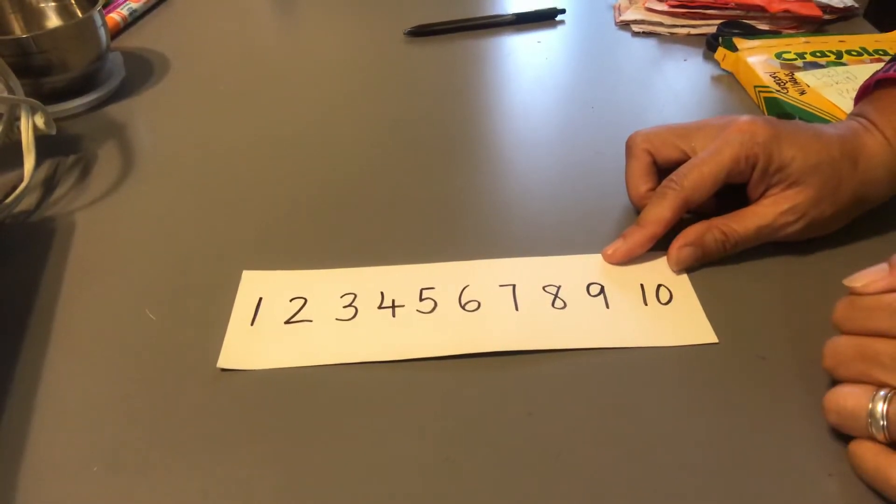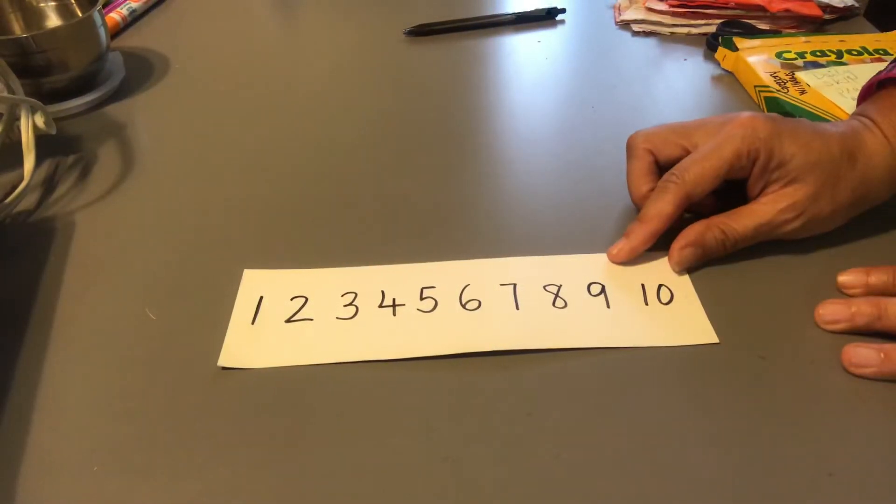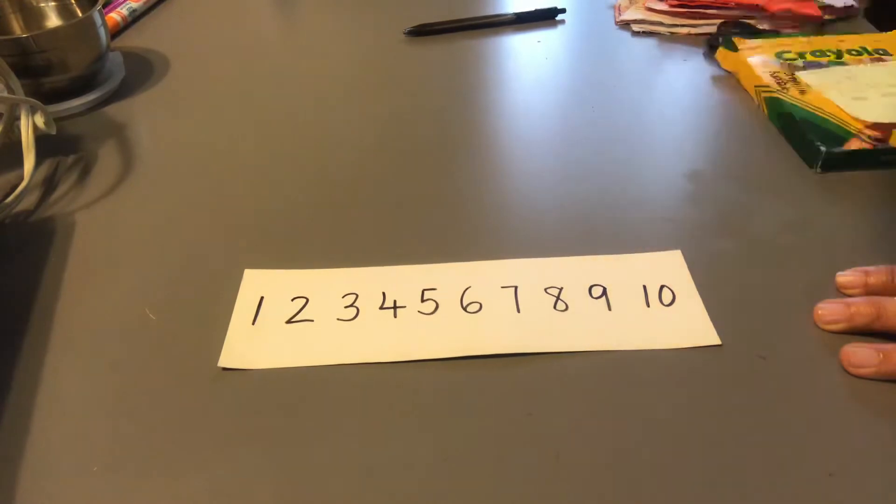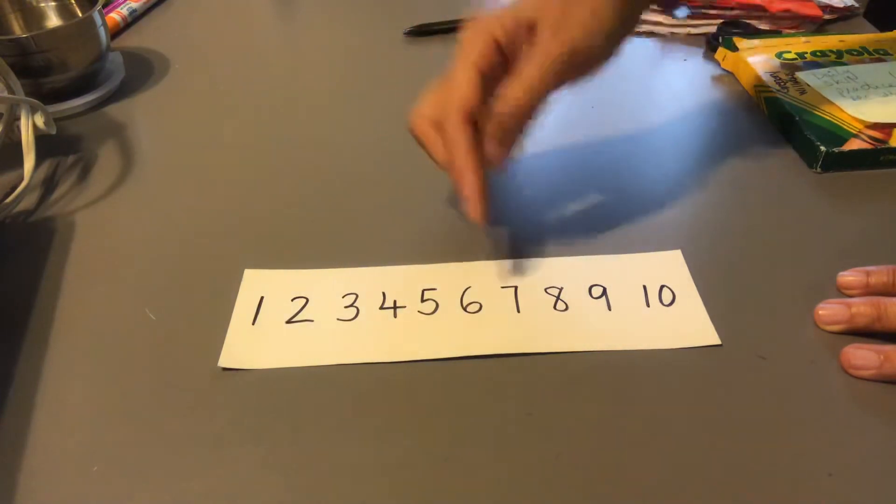Once they know how to do that by themselves, it's good because if they see a number and they don't remember what it is, they can always count to get to that number and say, 'Oh, that's the number 7.'